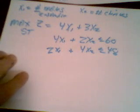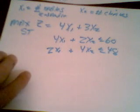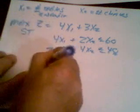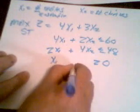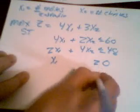And likewise for Department B, it's 2x1 plus 4x2 is less than or equal to 48. We also have two more constraints called non-negativity constraints, which means you can't produce negative quantities of tables or chairs. So x1 greater than or equal to 0, and x2 greater than or equal to 0.